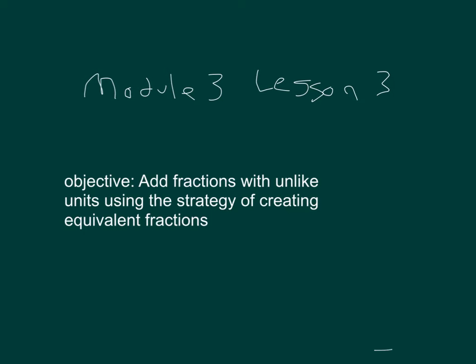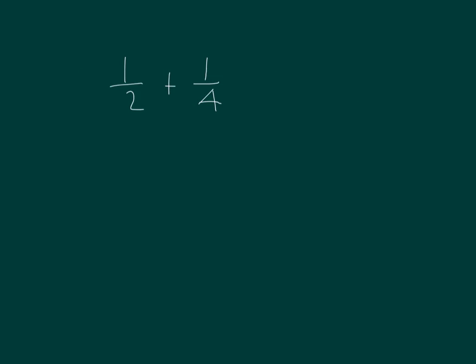The objective is to add fractions with unlike units using the strategy of creating equivalent fractions. Let's add one half plus one fourth. Let's make like units by drawing.